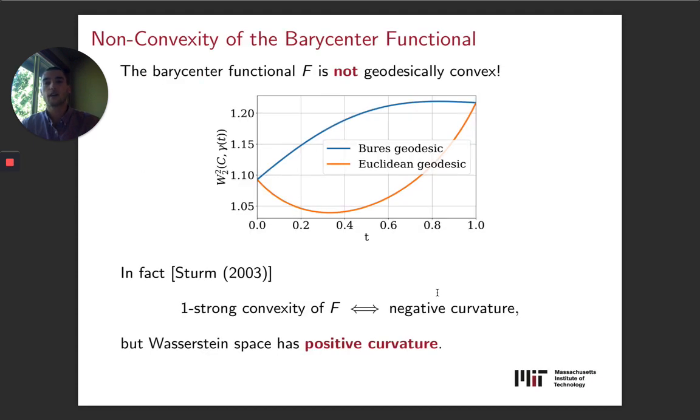In Riemannian optimization, a lot of work has gone to show that if your function is geodesically convex, then many results from Euclidean optimization have clear analogs. Now, the major wrinkle in our work is actually that the barycenter functional is not geodesically convex. This picture shows the Bures geodesic, or really the geodesics between two Gaussians with mean zero, it shows that actually in here, the blue line is concave. So it's not anywhere near convex. And in fact, this is not just an aberration. It's related to the basic properties of Wasserstein space and its curvature. So we know that in general, for metric spaces, if you have that the barycenter functional is strongly convex, it's actually equivalent to it being negatively curved. But Wasserstein space has positive curvature.